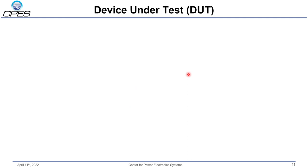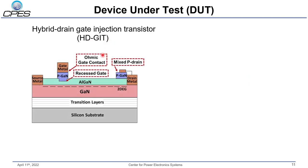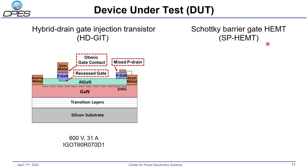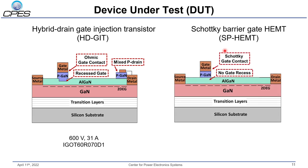The first device candidate tested is a hybrid gate injection transistor, the HPGIT. It has a recessed gate structure with a very thin AlGaN layer between the P-GaN gate and GaN buffer, around 10–15 nanometers, and an ohmic gate contact. It also has another piece of P-GaN electrically connected to the gate to suppress dynamic RDS(on). This device is rated 600 V and 31 A. The second candidate is a Schottky P-gate HEMT, the SP-HEMT. It has a Schottky gate contact with no gate recess structure, and is rated 650 V and 30 A.